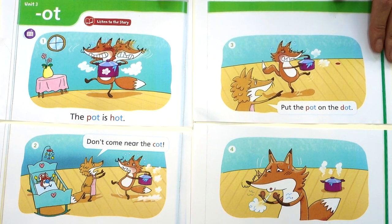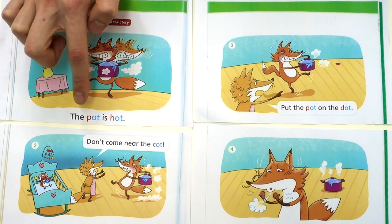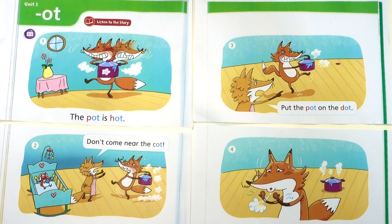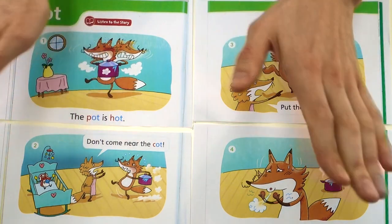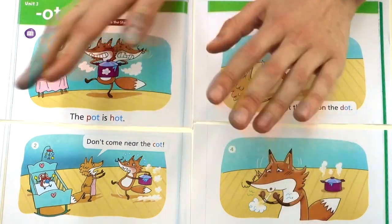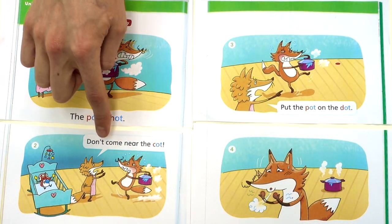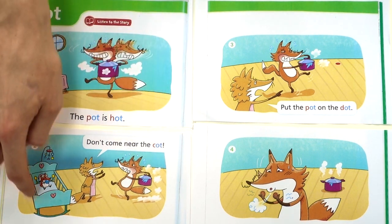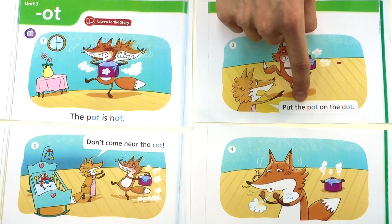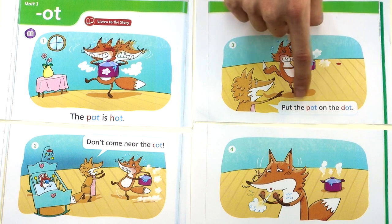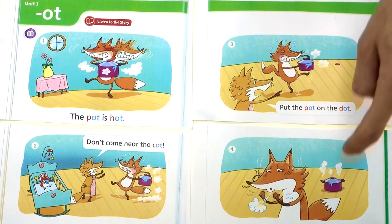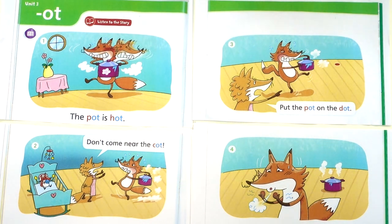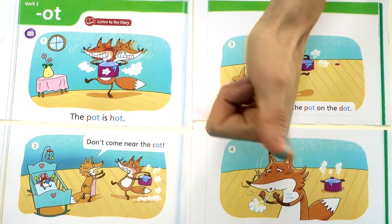Let's read one more time. The pot is hot. The pot is hot. Don't come near the cot. Don't come near the cot. Put the pot on the dot. Put the pot on the dot. Oh, dear. My hands are hurting. Did you like this story? I like this story.